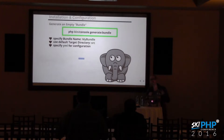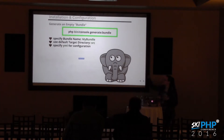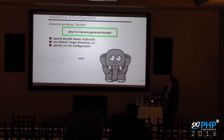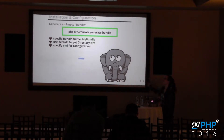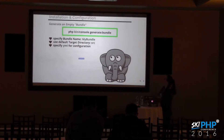Now we're going to generate an empty bundle. 'Bundle' is what Symfony calls your project code, and it assumes you're going to want one bundle per significant programming task. To create a new one, on the command line run 'php bin/console generate:bundle'. All commands in Symfony reference 'bin/console' — in Symfony 2 it used to be 'app/console', in Symfony 3 it's now 'bin/console'. You need to be at the root of your project when running this.